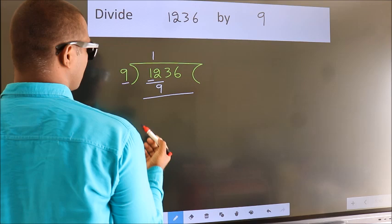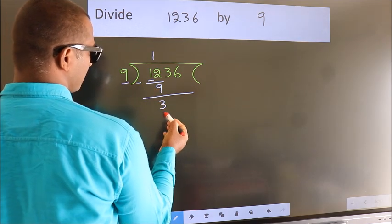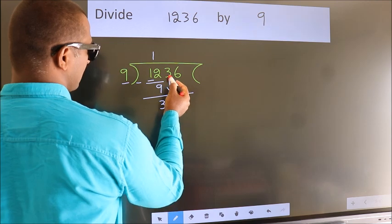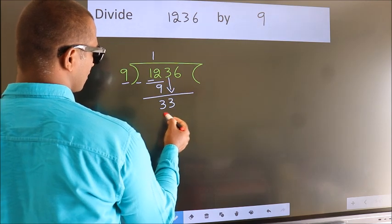Now we should subtract. We get 3. After this, bring down the beside number. So, 3 down, giving us 33.